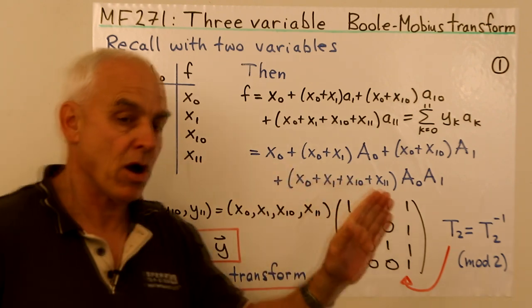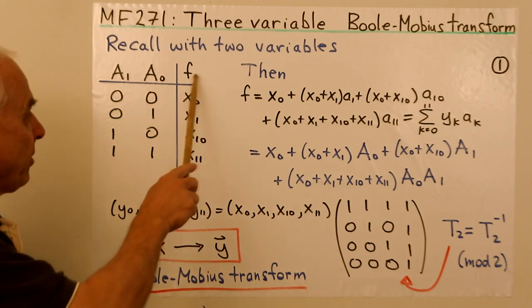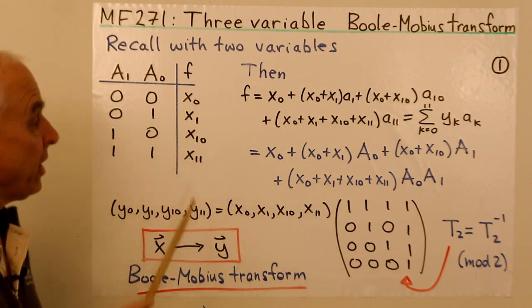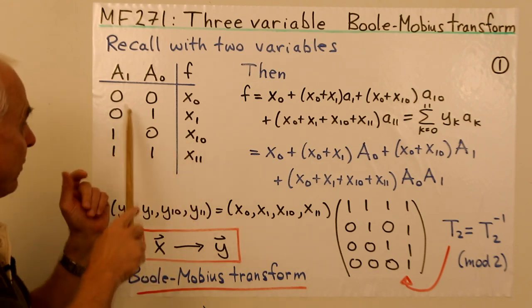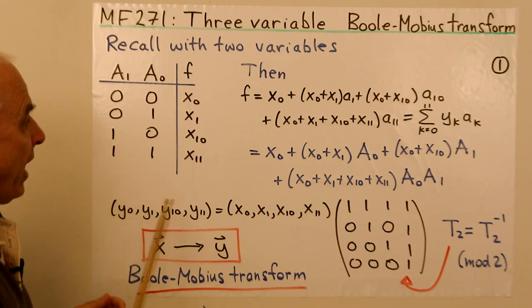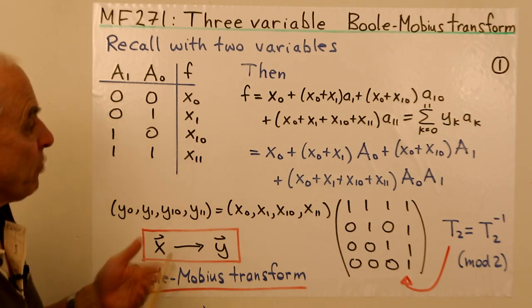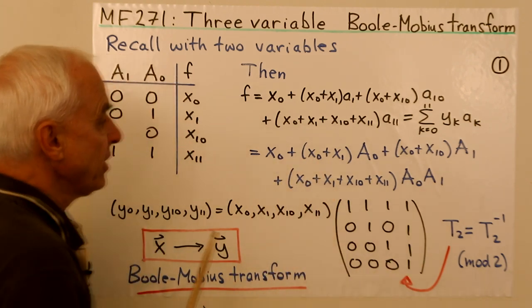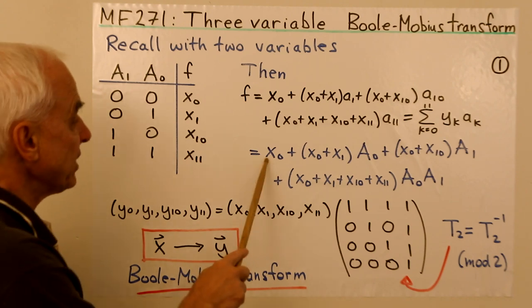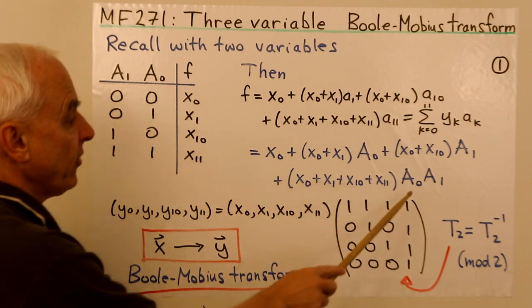Let me remind you where we are currently with the two-variable situation. We're thinking about a Boolean function with two variables, A0 and A1, and the values of this function are x0, x1, x2, x3 written in binary, corresponding to the way we are writing the input possibilities. We can express this as a Boole polynomial in this fashion, as a linear combination of 1, A0, A1, and the product A0A1, with coefficients x0, x0+x1, x0+x2, and the sum of all four.